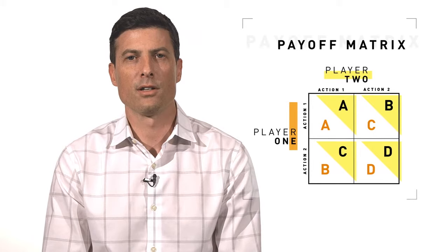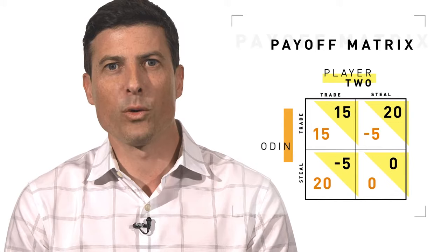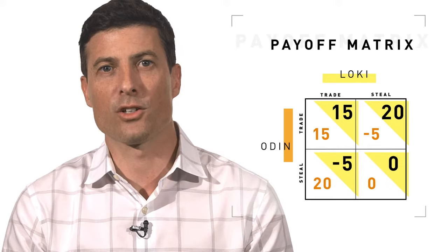A common way to fill out a payoff matrix is by assigning point values to different outcomes, or by ranking the outcomes from first to worst. In this example, Odin is player one and Loki is player two. The points on the left side are Odin's payoffs and those on the right side are Loki's. The specific numbers we choose to represent the payoffs don't matter — the point is to represent the relative attractiveness of each option.